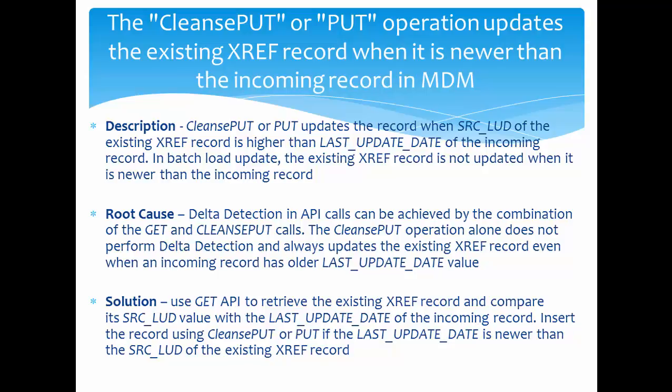In batch load, if you enable delta detection on first name, then only when first name changes will the record update — it checks delta columns. However, for cleansport and PUT, delta detection is not checked. Even if there is no change in first name or last name, and you have just updated the source last updated column, the record will still be updated. That is the key difference: cleansport and PUT do not check delta detection columns and update directly.